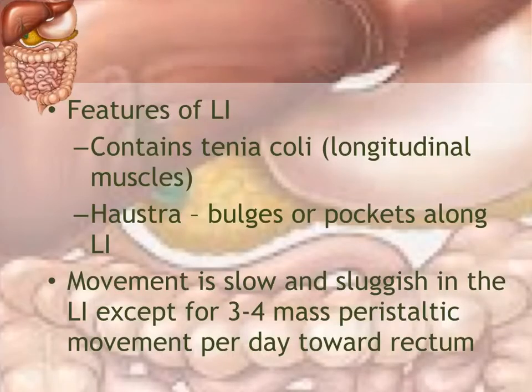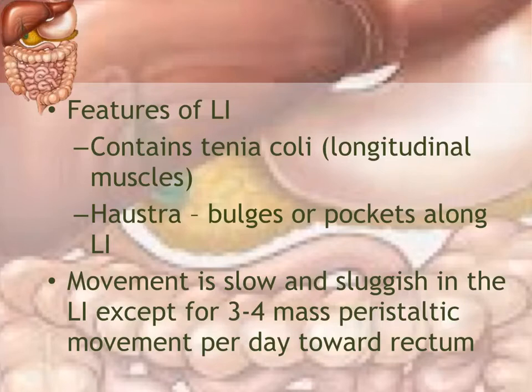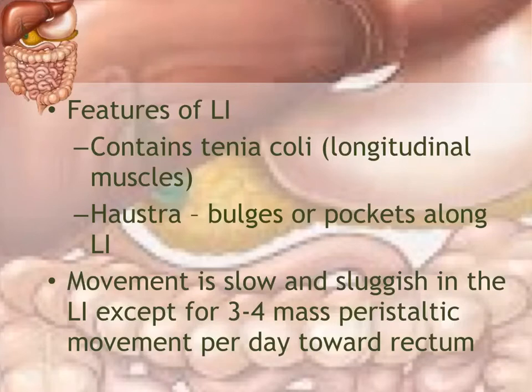Features of the large intestine include structures called taenia coli, which create the haustra — the bulges or pockets along the large intestine. Movement is slow and sluggish in the large intestine compared to the small intestine, and it is not a steady movement. Food sits in one of the haustra for a while, then there is a massive movement from one haustrum to the next. In the small intestine, movement is constant.